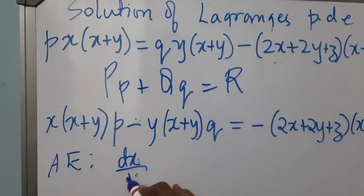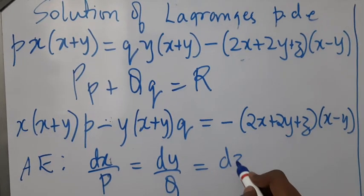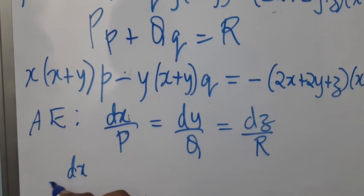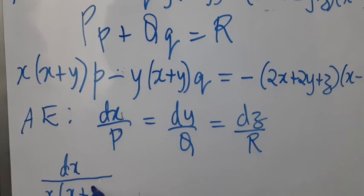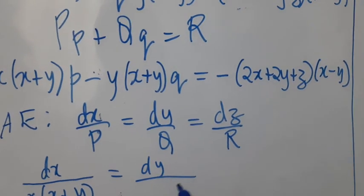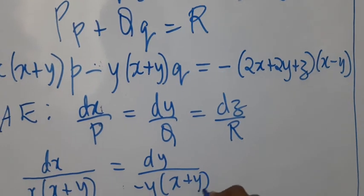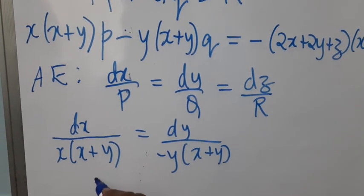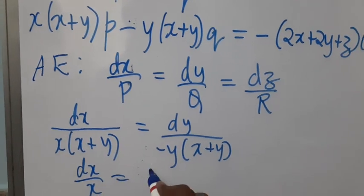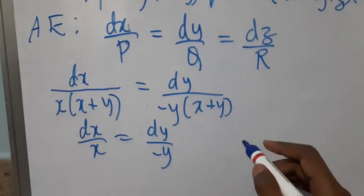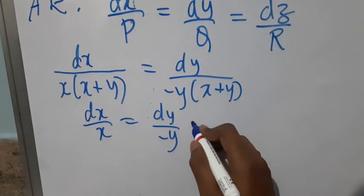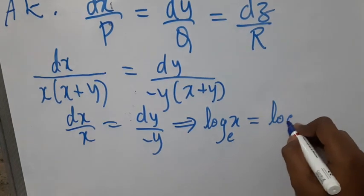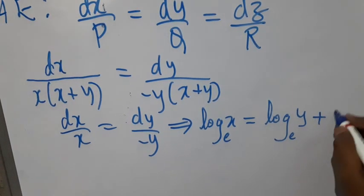We can write the auxiliary equation given by dx/P equal to dy/Q equal to dz/R. So we get dx divided by X(X+Y) equal to dy divided by minus Y(X+Y). We can cancel out (X+Y), and this results in dx/X equal to dy/(minus Y).